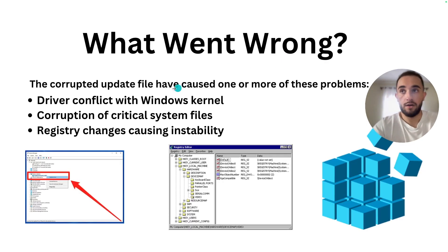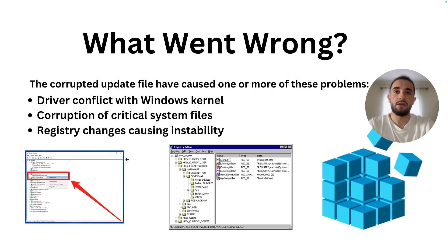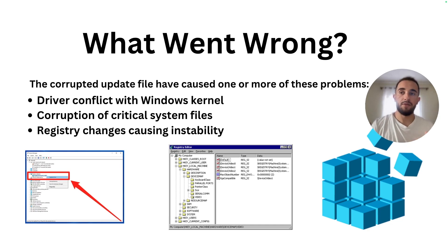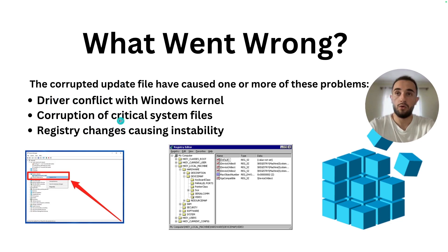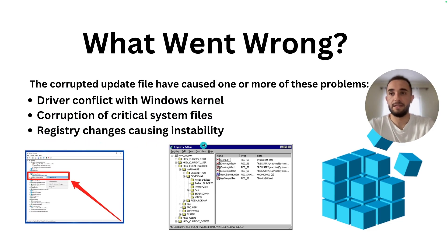So what went wrong? A corrupted update file caused one or more problems. Like all software that updates frequently, CrowdStrike updated Falcon, but this update had an error — it was not a perfect update — and it was sent out to all endpoints and devices at the same time. This caused one or more errors: driver conflict with the Windows kernel, corruption of critical system files, and registry changes causing instability.